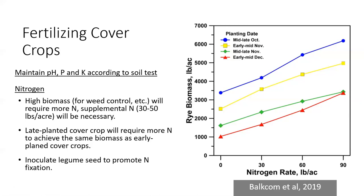When we have a legume in the mixture, we typically do not need to apply that additional nitrogen, as long as we have approximately 30% stand cover of our legume cover crop. It is important, however, to make sure you inoculate legume seed, as this helps promote nitrogen fixation. You can look up on the fact sheets what specific inoculant is needed for a specific legume.